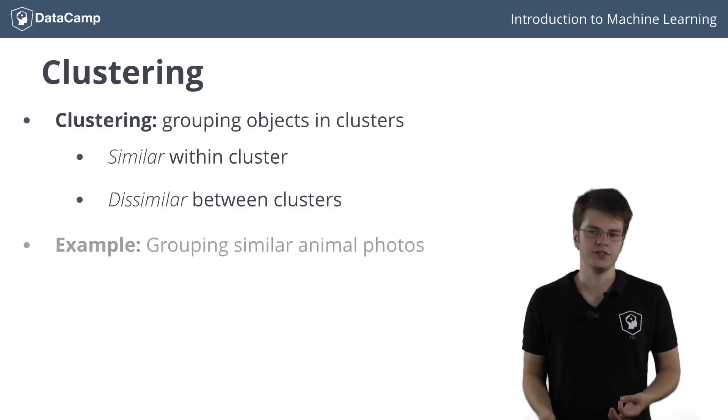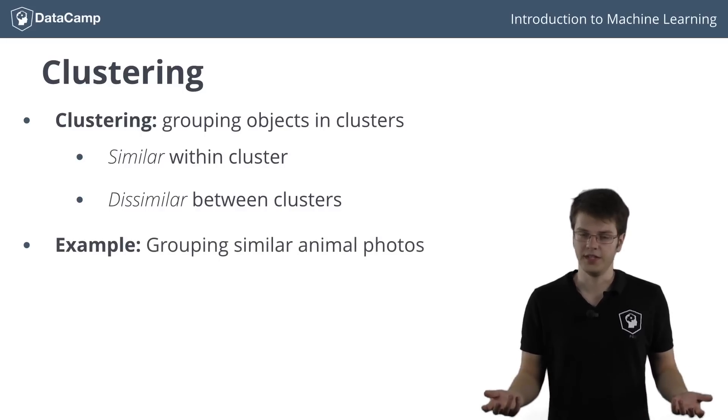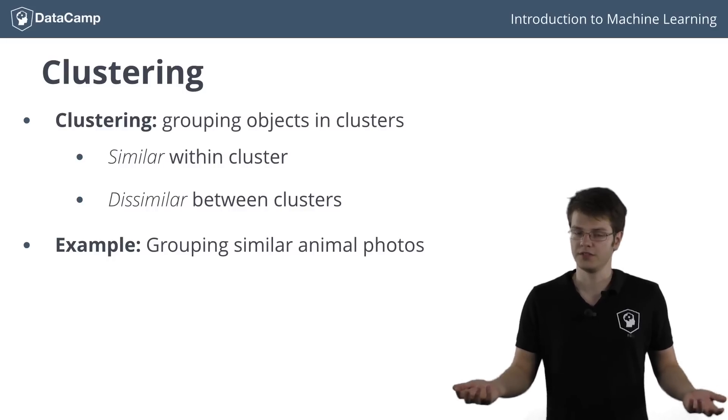Take the animal photos for example. In the case of classification, you had information about the actual animals that were depicted. In the case of clustering, you don't know what animals are depicted, you will simply get a set of pictures. The clustering algorithm then groups similar photos in clusters.